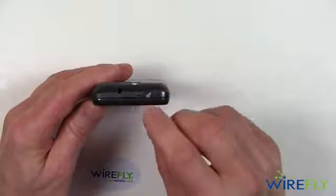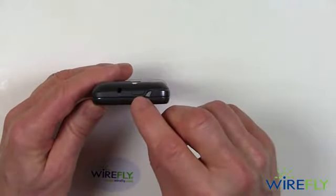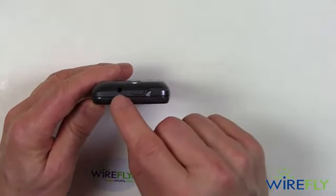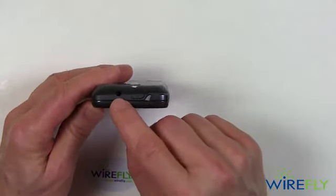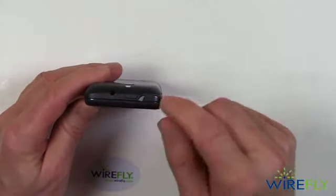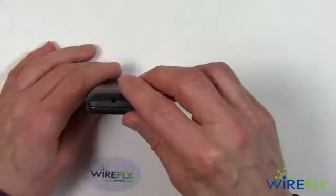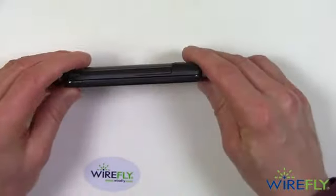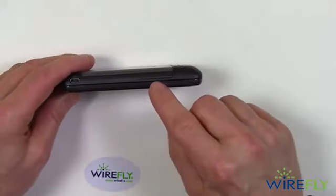Rotating the phone up, you've got the on-off button. And you have a 3.5mm audio jack — that's for stereo audio.